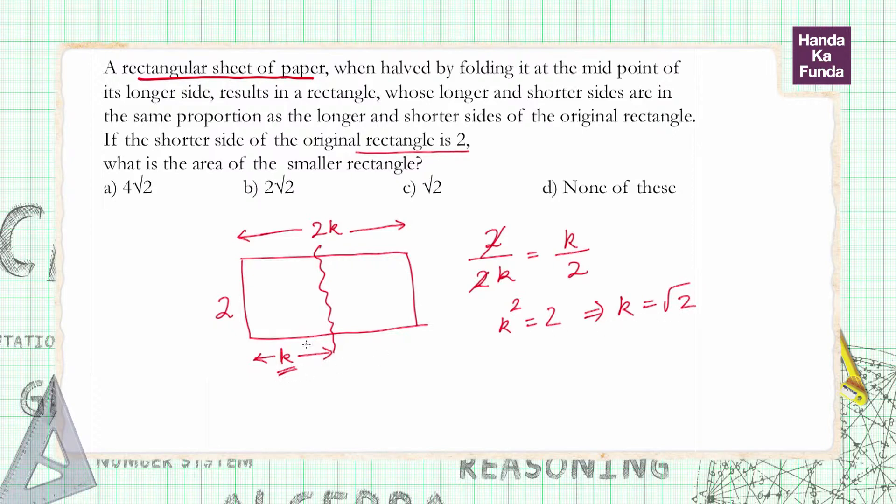Once we got the value of k equals root 2, what are we asked to find out? We are asked to find out the area of the smaller rectangle. Area of the smaller rectangle is 2k, or 2 root 2, and that is given to us as option b. Thank you.